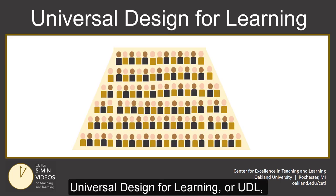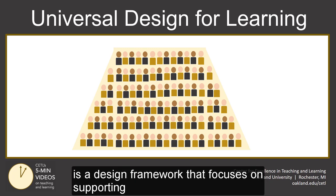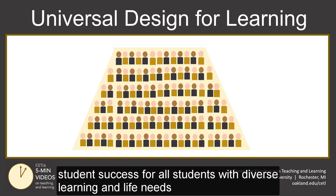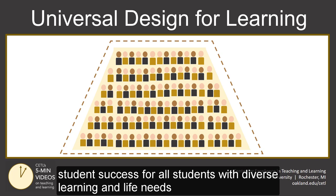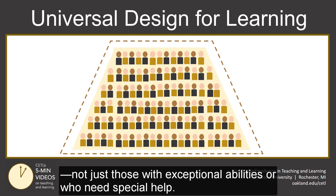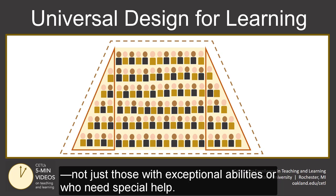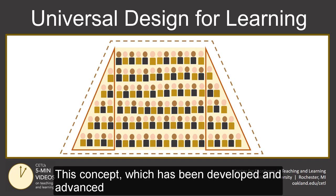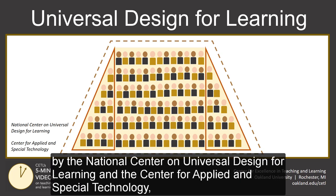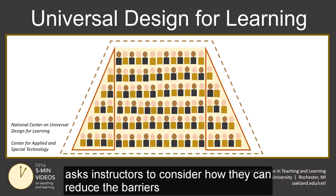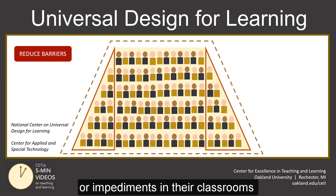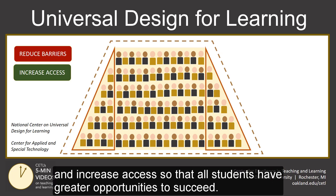Universal Design for Learning, or UDL, is a design framework that focuses on supporting student success for all students with diverse learning and life needs, not just those with exceptional abilities or who need special help. This concept, developed and advanced by the National Center on Universal Design for Learning and the Center for Applied and Special Technology, asks instructors to consider how they can reduce barriers or impediments in their classrooms and increase access so that all students have greater opportunities to succeed.